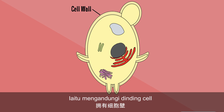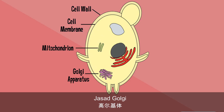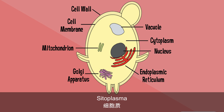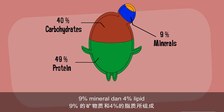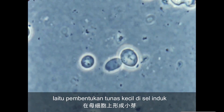The organelles include cell wall, cell membrane, mitochondria, Golgi apparatus, endoplasmic reticulum, nucleus, cytoplasm, and vacuole. Yeast is composed of 49% protein, 40% carbohydrates, 9% minerals, and 4% lipid. Most yeast reproduce asexually by budding, where a small bud is formed on the parent cell.